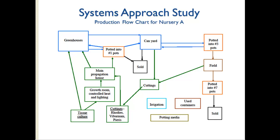Here's an example of a production flow chart for one of the nurseries we worked with. They started with tissue culture plantlets or woody cuttings. The tissue culture plants went into a growth room and then a main propagation house. The cuttings went into a propagation house and then were moved into greenhouses or potted into number one pots — one-gallon pots — where they were moved into a can yard and either sold or potted up. Some went to the field and were potted up again before being sold. Cuttings were also taken from plants in the can yard. We also sampled the irrigation water, used containers, and potting media.